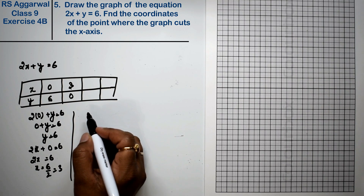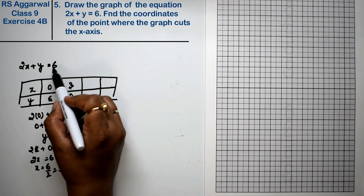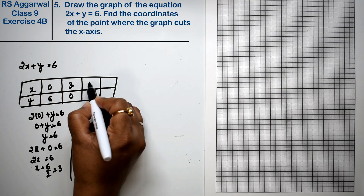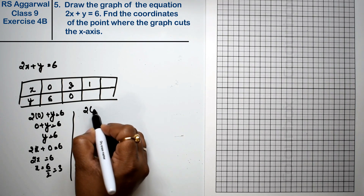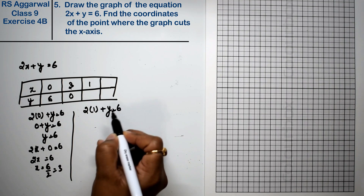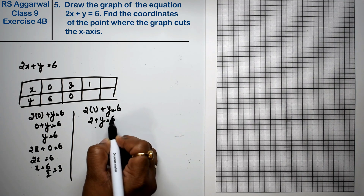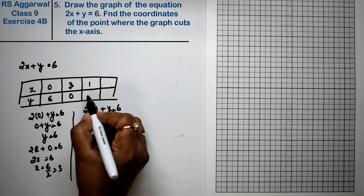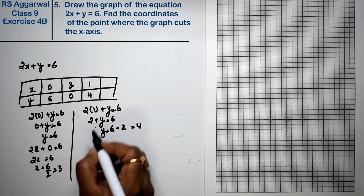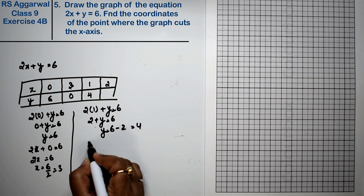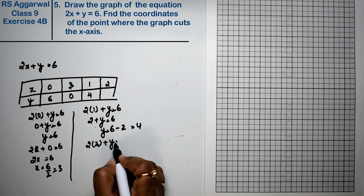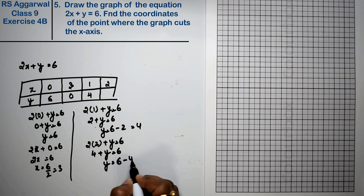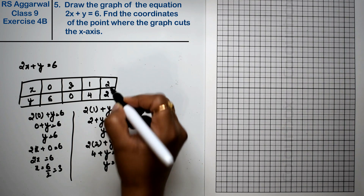If I keep x's value as 1, then 2(1) plus y equals 6, so y equals 6 minus 2, that is 4. If I keep x's value as 2, then 2(2) plus y equals 6, so y equals 6 minus 4, that is 2.